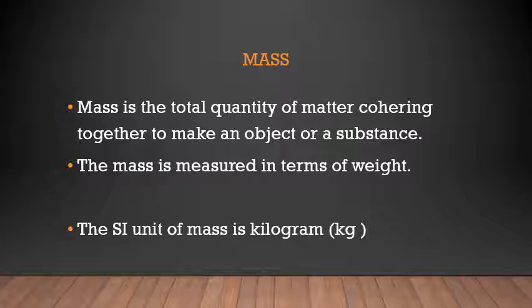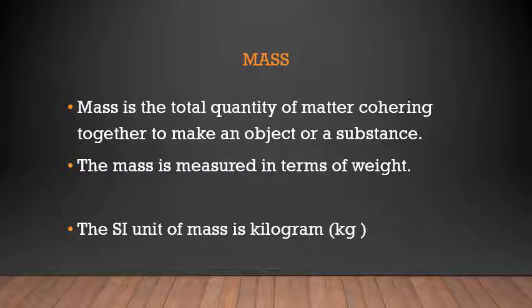So the SI unit, SI means standard unit of mass is kilogram or kg. Now the different measurements of weight are 100 milligram mg is equals to 1 gram. 1000 grams is equals to 1 kg. 100 kg is equals to 1 quintile. 1000 kg is equals to 1 ton. So these are the general measurements of weight that we use in our day-to-day life.